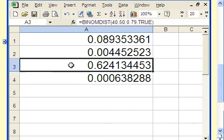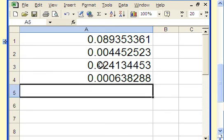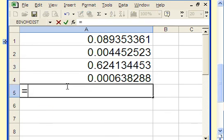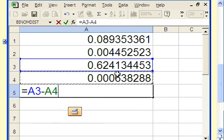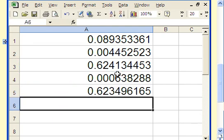So finally we'll just subtract. So this cell here, rather, equals. So A3 minus A4. Hit enter and we get 0.6235.